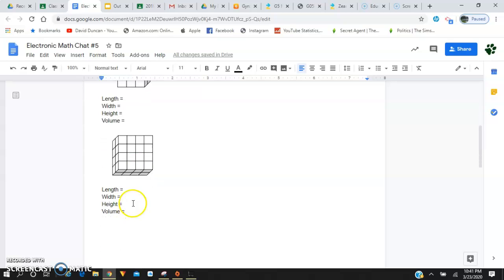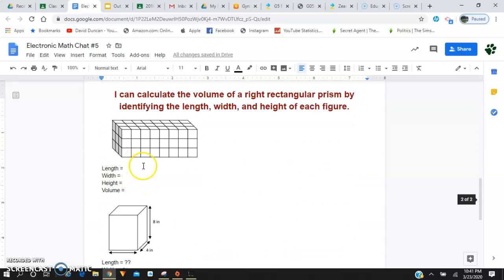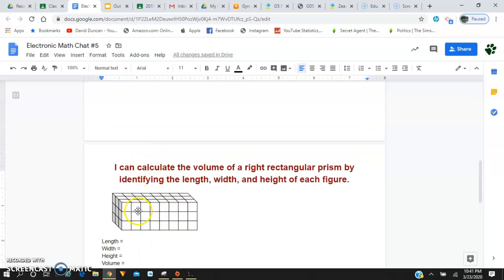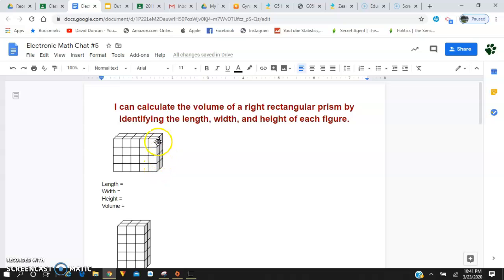So on this activity I have for you guys today, I have one, two, three different right, I'm sorry, I have four. Yeah, four right rectangular prisms that have the unit cubes already drawn out and sketched in each right rectangular prism. I'm going to do the first one with you guys, and then I'm going to have you do two, three, and four on your own.